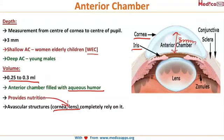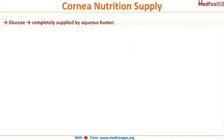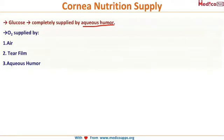The cornea is a bit more advanced regarding its nutrition. It derives only glucose from aqueous humor — the entire glucose supply comes from aqueous humor. However, oxygen is supplied by 3 sources: number 1 is atmospheric air when the eyes are open, number 2 is the tear film, and number 3 is aqueous humor.